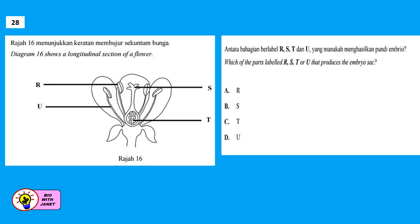Question 28: Diagram 16 shows a longitudinal section of a flower with parts R, S, T, and U labeled. Which part produces the embryo sac? The embryo sac is found in the ovule, so the answer must be T. This is a simple recall question.